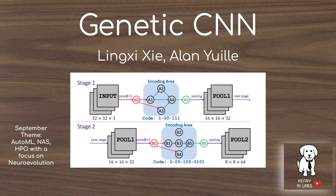Thanks for watching Henry AI Labs. This video will explain the Genetic CNN, in line with the September theme on AutoML, neural architecture search, and hyperparameter optimization with a focus on neuroevolution. This algorithm is the best way to get started with neuroevolution, particularly for image classification using convolutional neural networks.